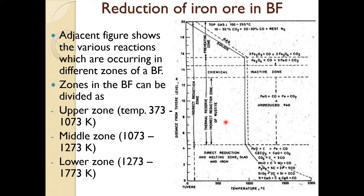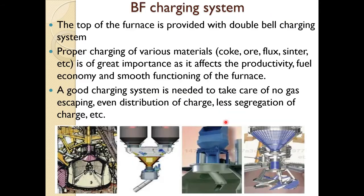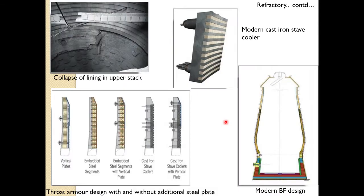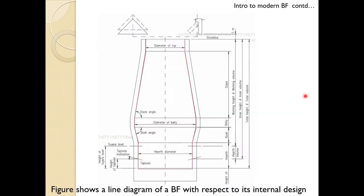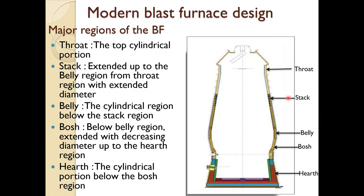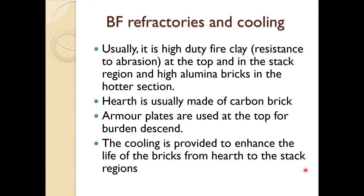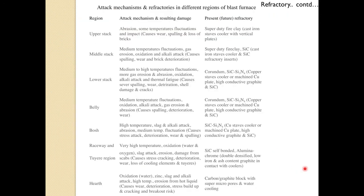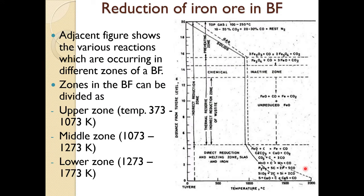This figure shows the various reactions occurring in the blast furnace across different regions: the throat region, stack region, belly region, bosh, and hearth. We will now discuss one by one what sort of reactions occur in each zone.